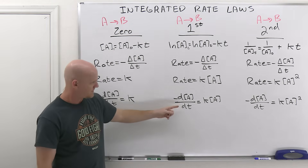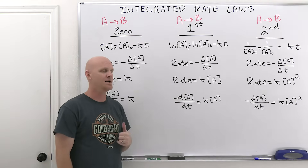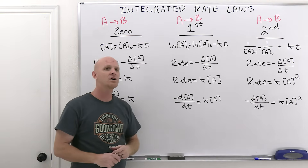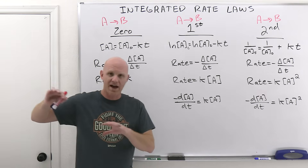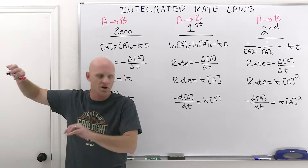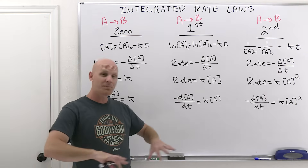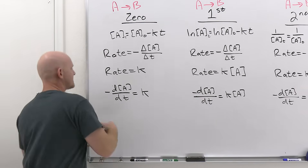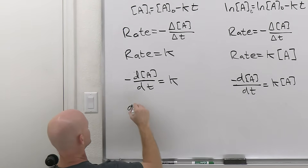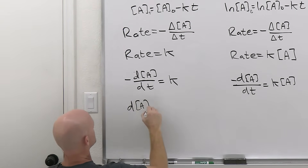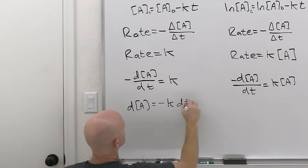A very common way to solve these differential equations is called separation of variables, where we get all the A's and dA's on one side of the equation and all the t's and dt's on the other side. For the zero-order case, we get dA by itself and put everything else on the other side, giving us negative K dt.